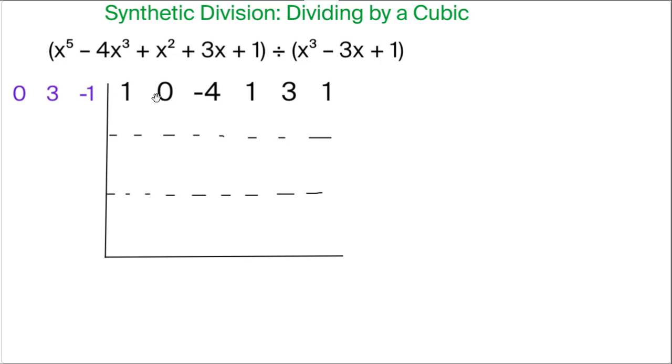At the top of your synthetic division you put the coefficients from what you're dividing this cubic into. Notice that in this case there's no x to the fourth term so you put a zero there. So 1x to the fifth, no x to the fourth, and then minus 4x cubed, 1x squared, 3x plus 1.